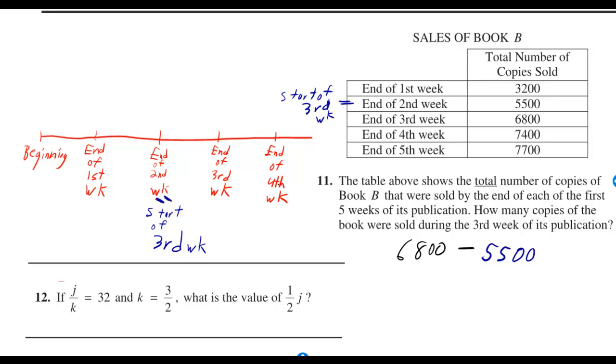The table above shows the total number of copies of Book B that were sold by the end of the first five weeks of its publication. How many copies of the book were sold during the third week of its publication?